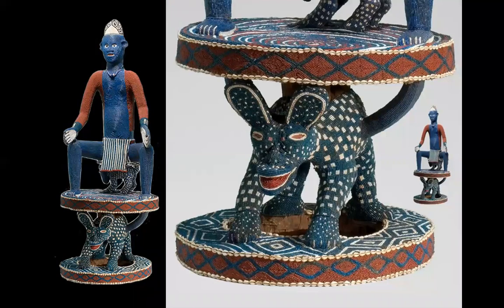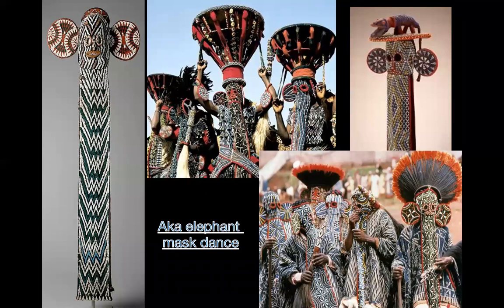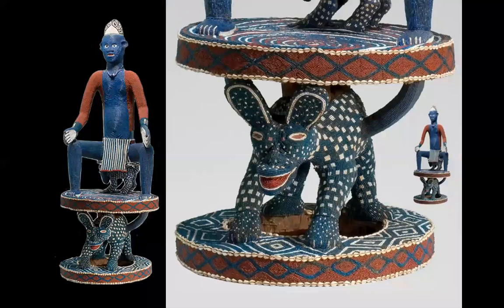At the Nelson museum, in the African Gallery, we have a piece from Cameroon you can easily relate to the elephant mask — it's covered in beads with very similar geometric patterns. And it is a throne. That is all.